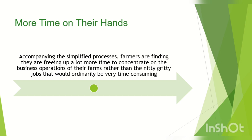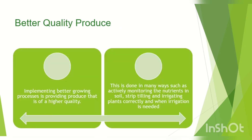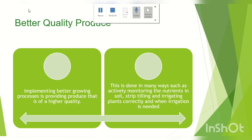These crops include bell peppers, garlic, winter squash, tomatoes, and broccoli, among others. There are also better quality production benefits: implementing better growing processes provides produce of a higher quality. This is done by actively monitoring the nutrients in soil, strip tilling, and irrigating plants correctly and only when irrigation is needed.